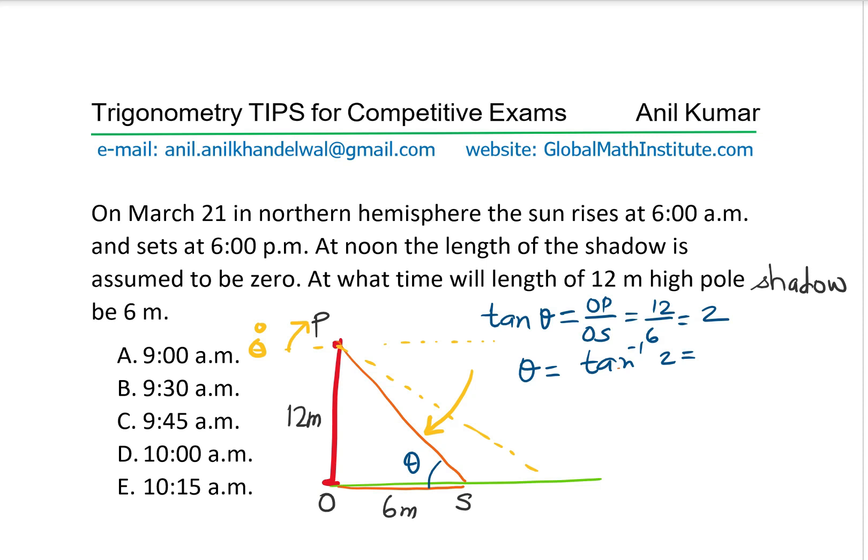Let's calculate: shift tan inverse of 2 gives us 63.4349 degrees. So it is good to know that tan inverse of 2 is slightly more than 60 degrees, since that can save a lot of time in multiple choice test papers. So we could say this is approximately 63.4 degrees.